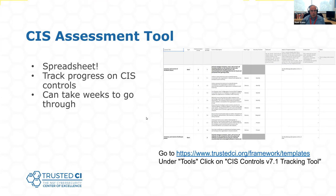This spreadsheet helps you track progress on implementing the CIS controls. You go through one by one and mark each as acceptable, not acceptable, or not applicable, adding notes along the way. You also note whether a control is relevant to your project — for instance, Trusted CI doesn't control our own Wi-Fi; that's handled by the institution. This can take a while, so don't try to do it in one sitting. For Trusted CI, we addressed it week by week in our meetings, and it took about four weeks to go through the whole spreadsheet.